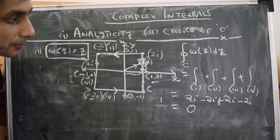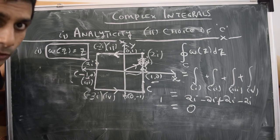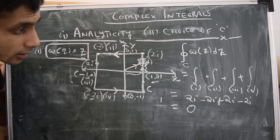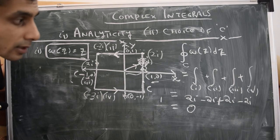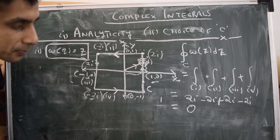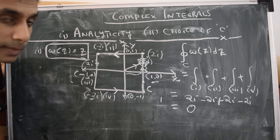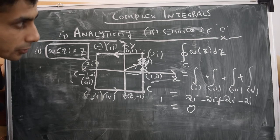Summing the four paths: path 1 gives 2i, path 2 gives -2i, path 3 gives 2i, and path 4 gives -2i. The net result is 0, which is exactly what Cauchy's integral theorem predicts since W(z) = z is analytic throughout this region. This explicit evaluation confirms the theorem.